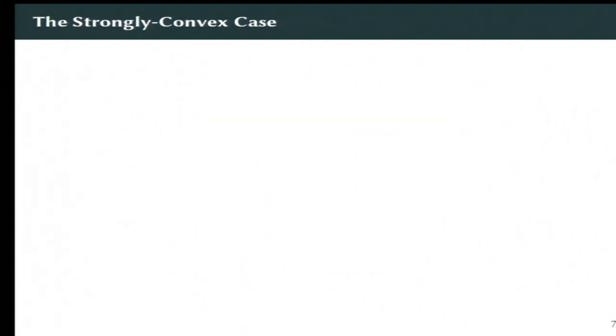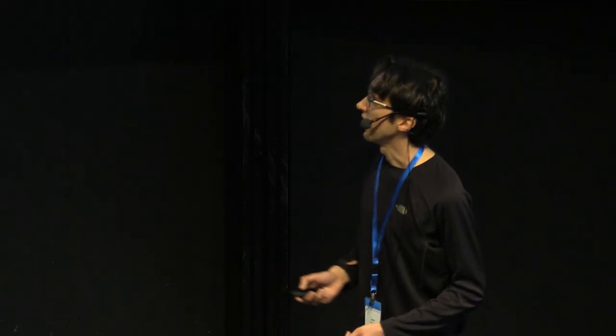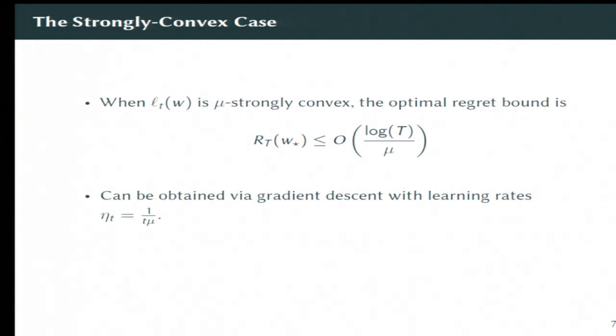Another goal that we might like to do is adapt to strong convexity. So if it is also the case that the losses are, in addition to being convex, are actually strongly convex, then you can do better than online linear optimization. It's well known that you can get regret that's logarithmic instead of square root. And this is also obtained by gradient descent if you have the right learning rates again. So again, we would like to do this without having to know this parameter mu, which we needed to tune the learning rate. And we would also like to be able to guarantee square root of T regret even when mu is somehow very, very small. So we'd like to interpolate nicely without ever knowing any second-order information.